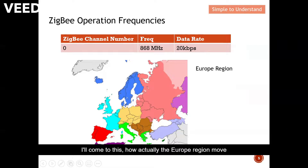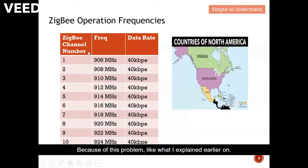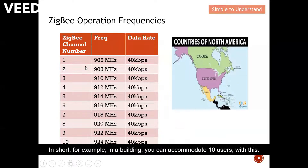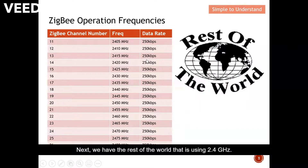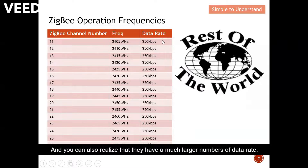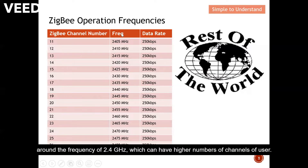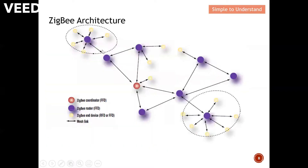Because of the single-channel problem in Europe, the solution was to expand to 10 channels, allowing a building to accommodate 10 users with also a higher data rate — this sparked off the deployment of ZigBee. The rest of the world uses 2.4 GHz, with 16 channels available and a much higher data rate. Europe, which originally used channel 0 at 868 MHz, moved into the 2.4 GHz region to benefit from higher numbers of channels. This is why ZigBee has a success story to share.